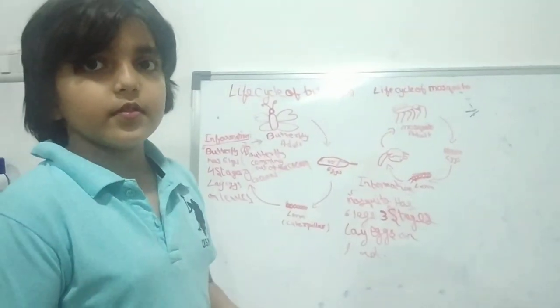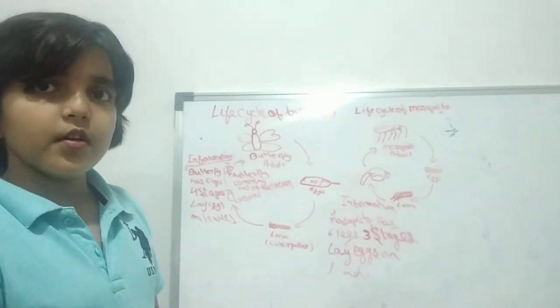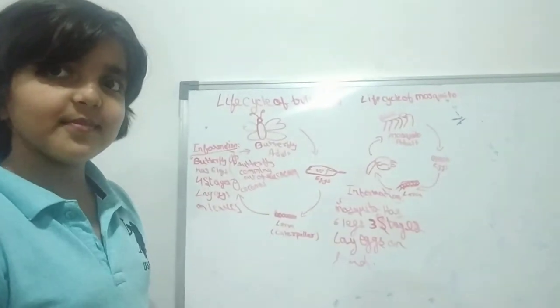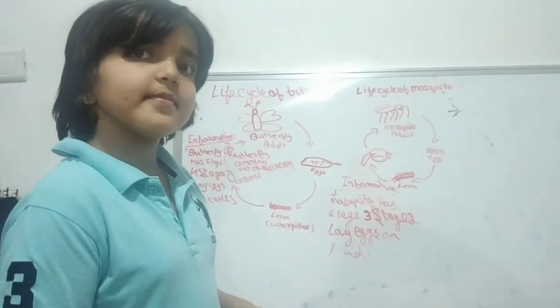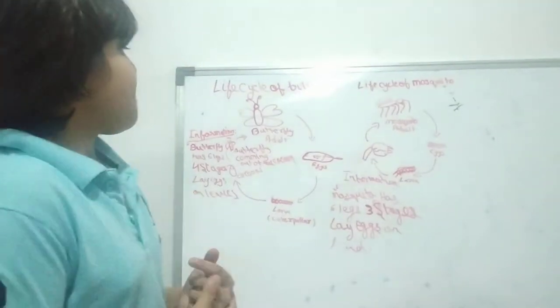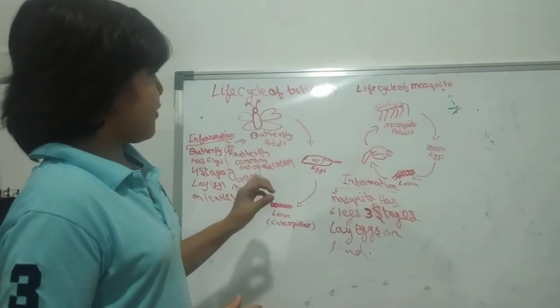So what do you conclude? I mean to say, what is the information that if you have to differentiate between mosquito and butterfly life cycle, then what is the thing that you tell? What is the difference in these two life cycles?